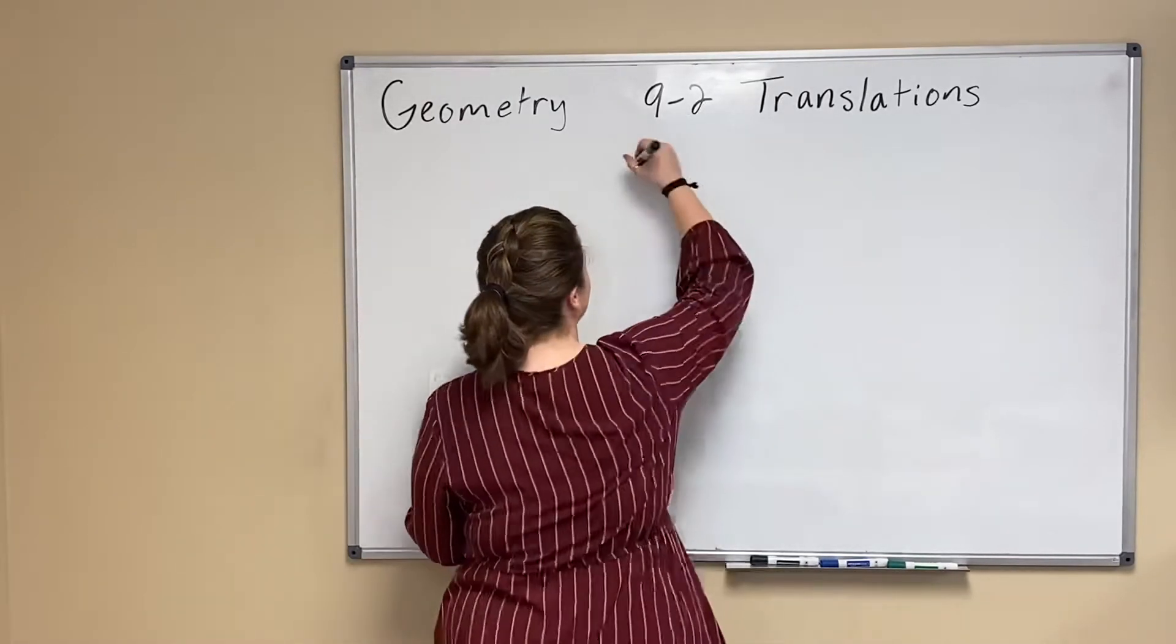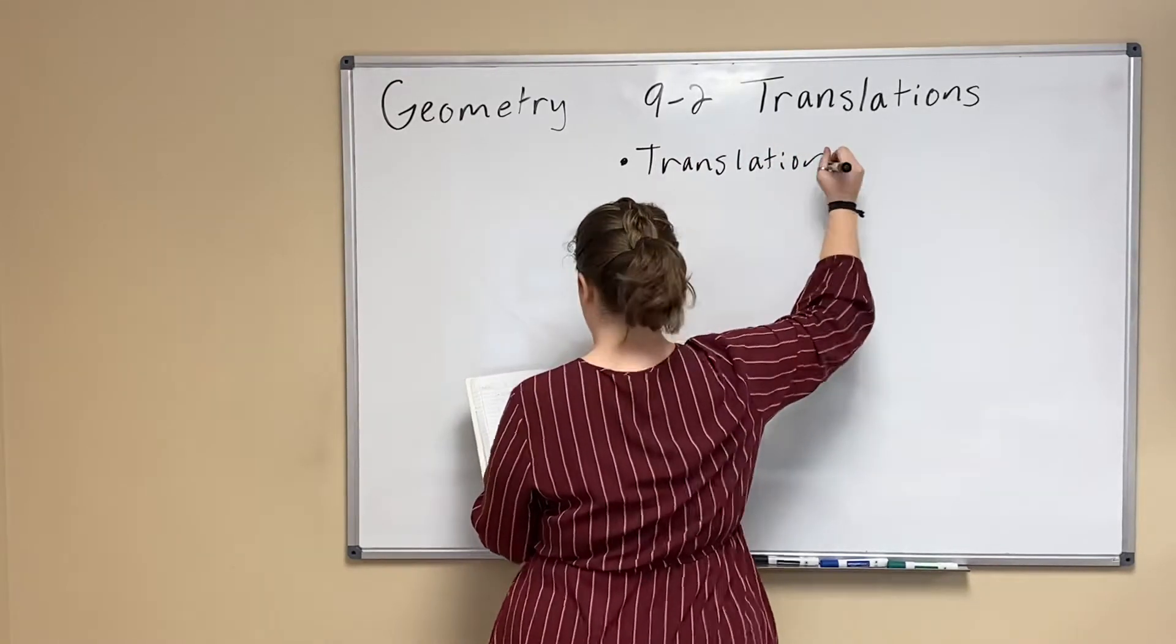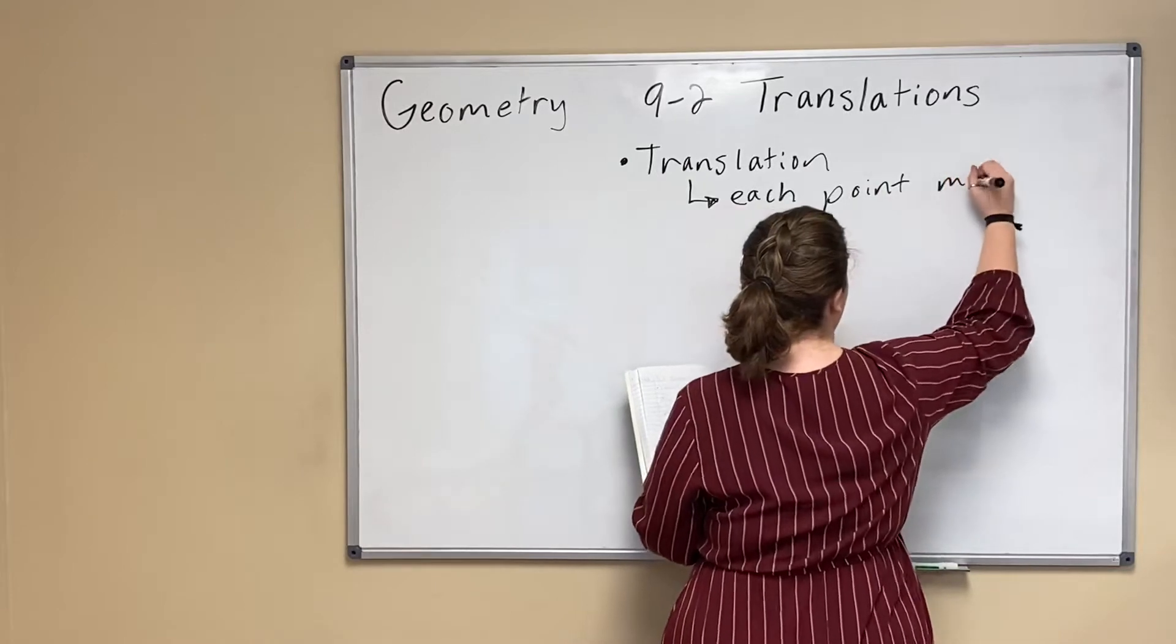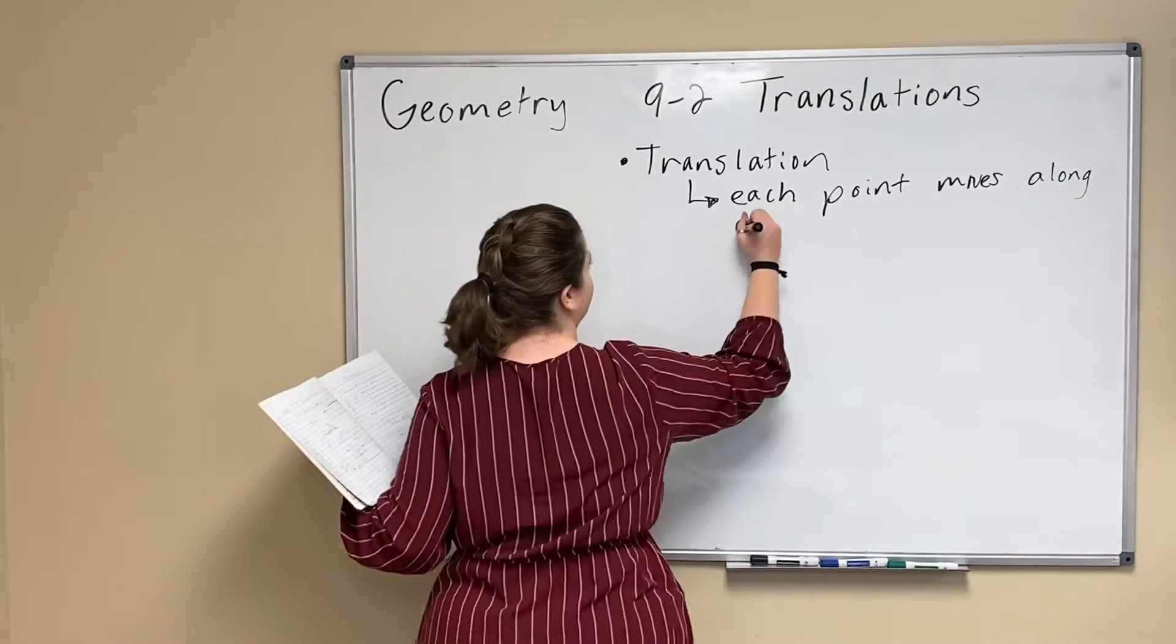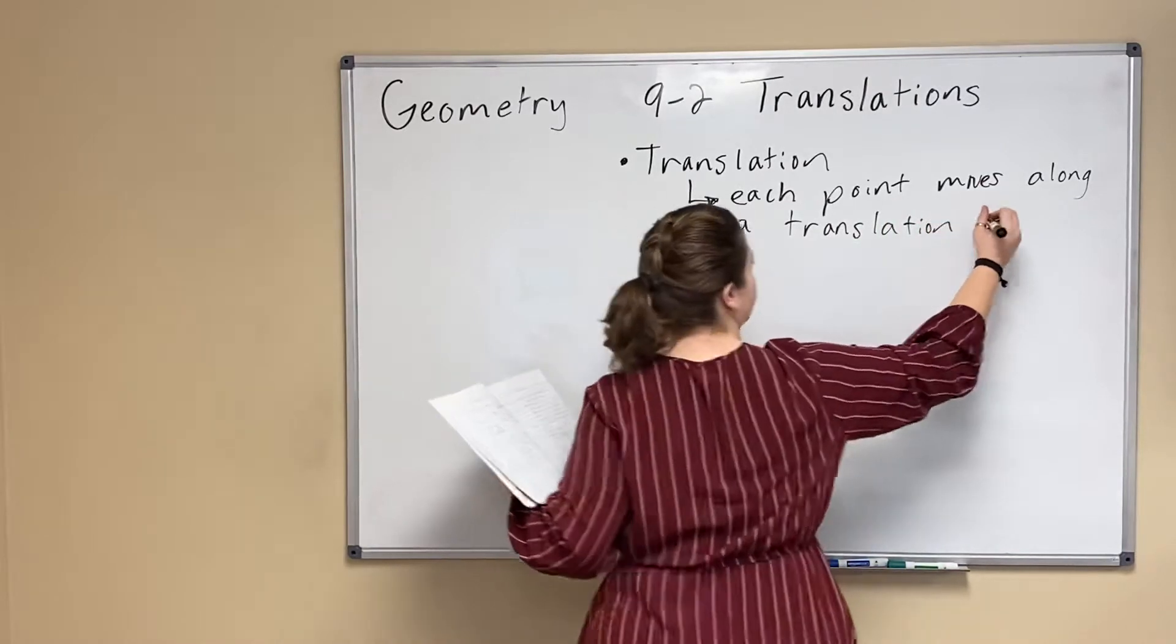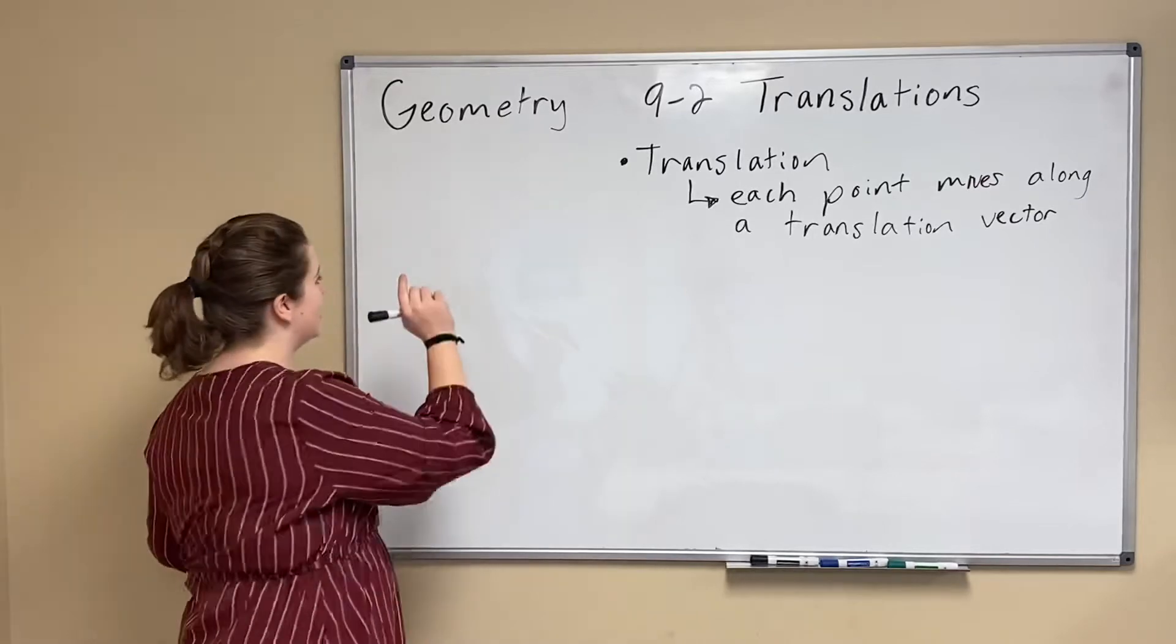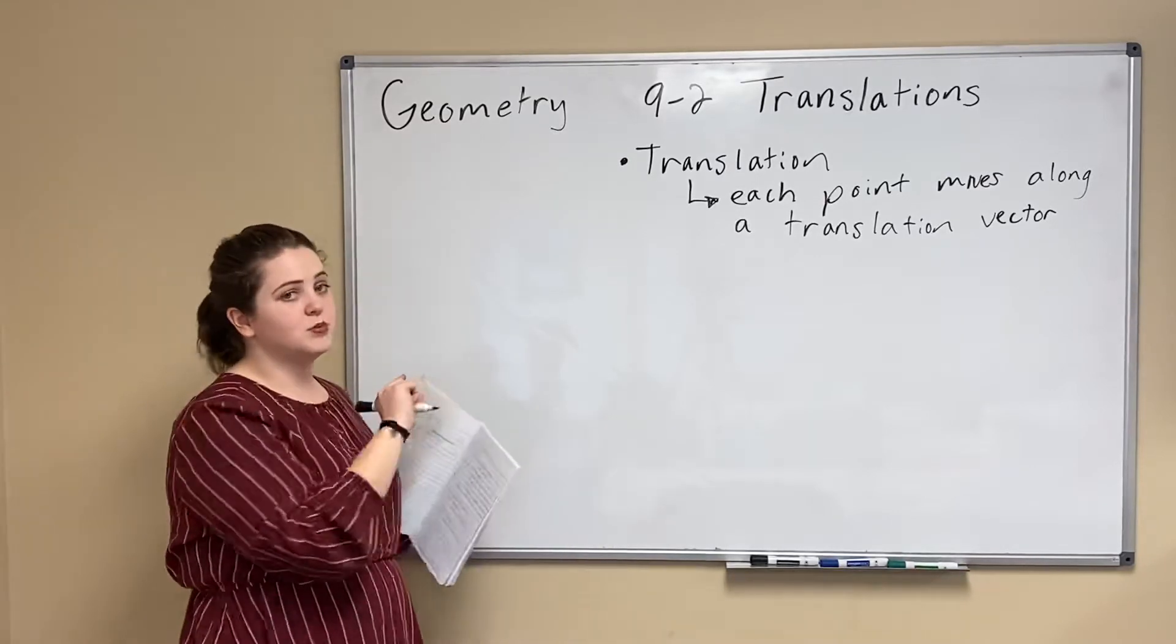Because a translation happens when each point of a figure moves along a translation vector, this means they're going to move the same distance as each other but they also must move in the same direction.